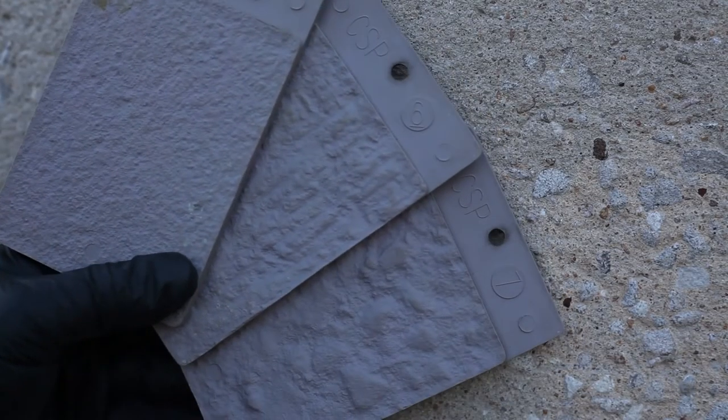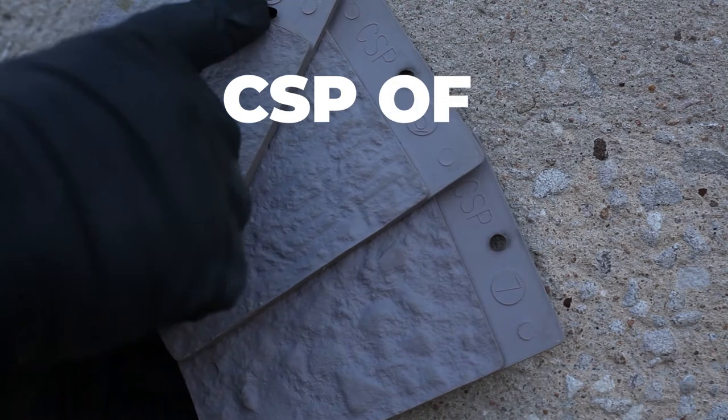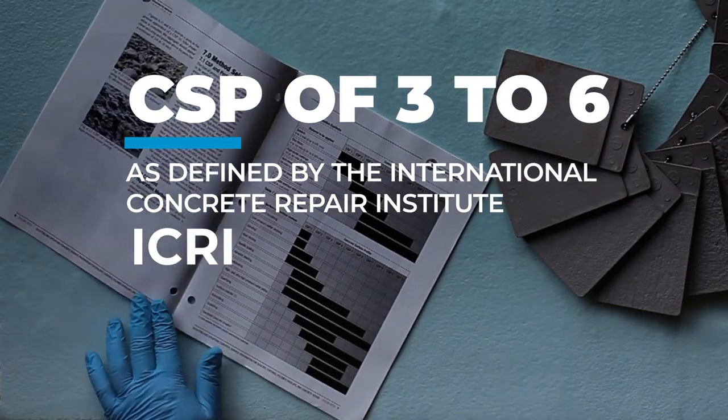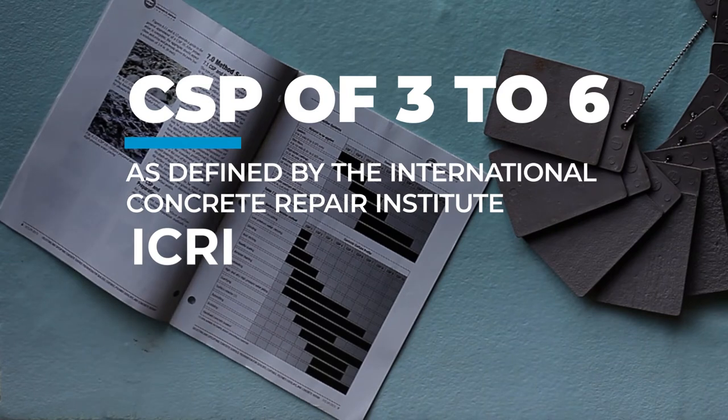A concrete surface profile, sometimes referred to as a CSP of between 3 and 6, as defined by the International Concrete Repair Institute, is recommended by most manufacturers.